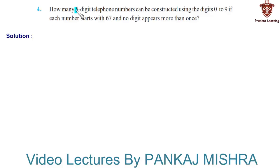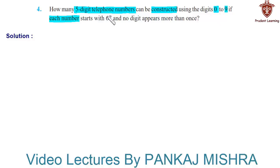How many 5-digit telephone numbers can be constructed using the digits 0 to 9 if each number starts with 67 and no digit appears more than once?